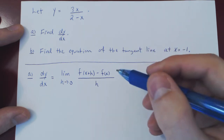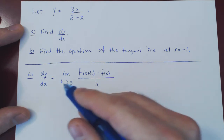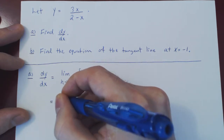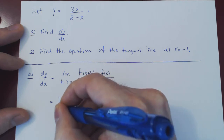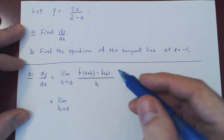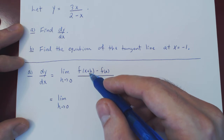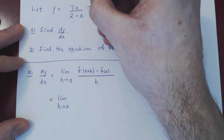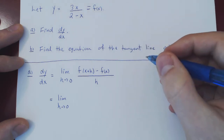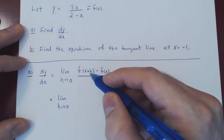It really is a three-step process. We first evaluate this, then we simplify, and then we let h approach 0. Let's first compute our numerator. We have f of x plus h. Now we are making a substitution — this is our function f of x, and now we are saying replace x everywhere by the new variable x plus h.